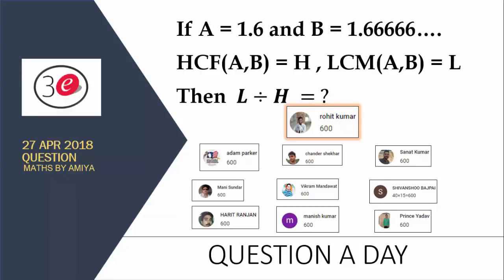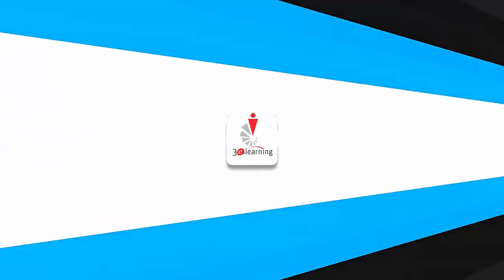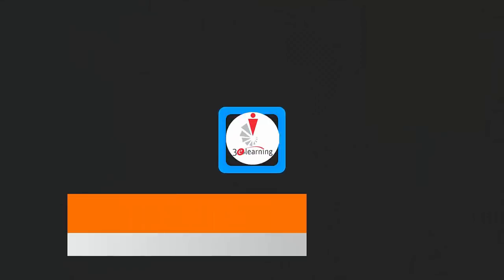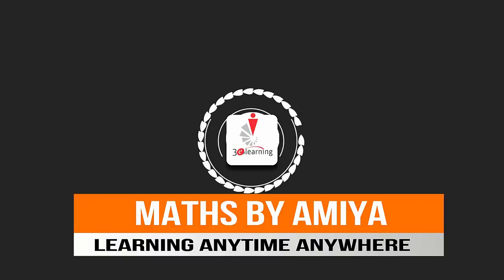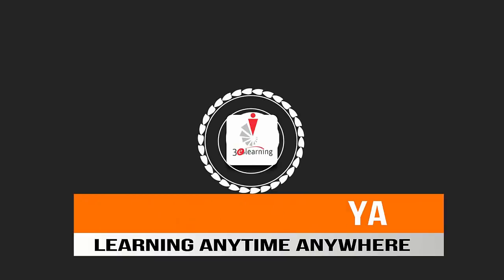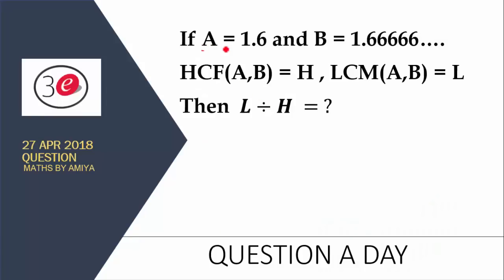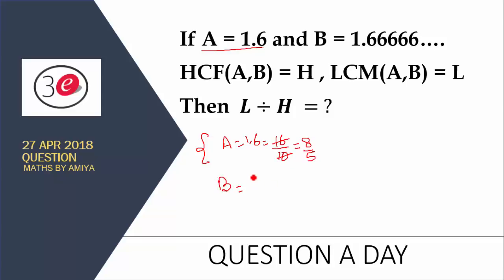Now it's time to check the solution. We have a = 1.6, which is nothing but 16 upon 10, and you must know whenever we have a fraction, the fraction should be in simplest form, so we have nothing but 8 by 5. Now we have b = 1.6 recurring, and this one is nothing but (16 minus 1) upon 9, which is 15 by 9, or 5 by 3.